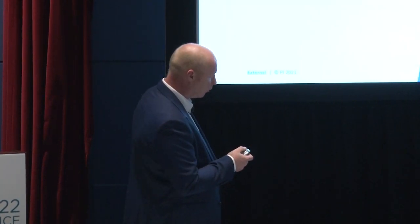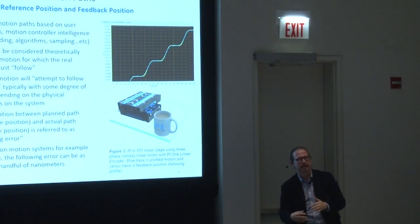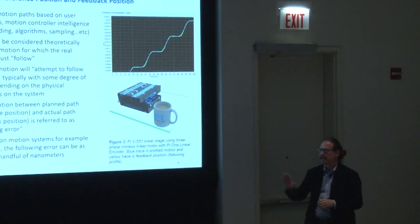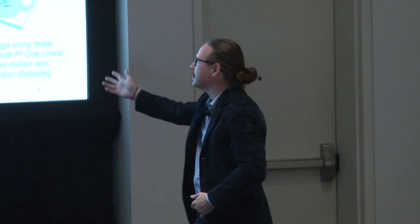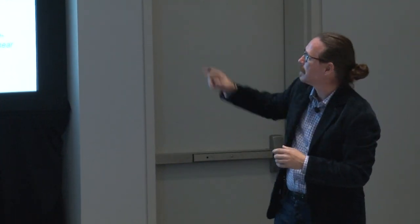This ties back to the original fly ball governor set point example — but in a modern context where instead of constant velocity, you're maintaining position-related set points in time. It's similar in concept to feedback on coffee temperature — using feedback to optimize the process. The connection is trying to follow idealized motion paths using position feedback, as in the upper right image shown here.